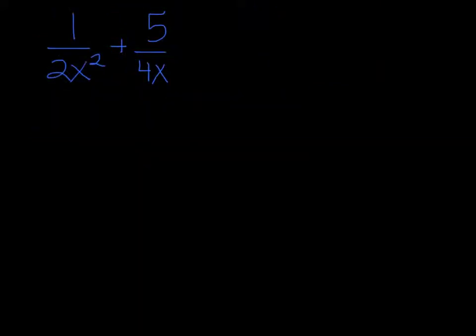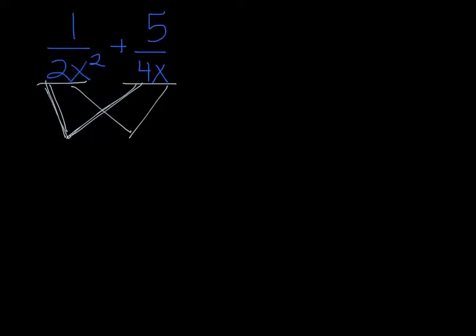Here's one: it's just 1 over 2x squared plus 5 over 4x. We don't have a common denominator, so we have to figure out what both of these have in common. Split it up into the constants and then the variables. We've got 2 and 4 — both go into 4. And then we have x squared and x. x goes into x squared because x squared is x times x. So our lowest common denominator is going to be 4x squared.